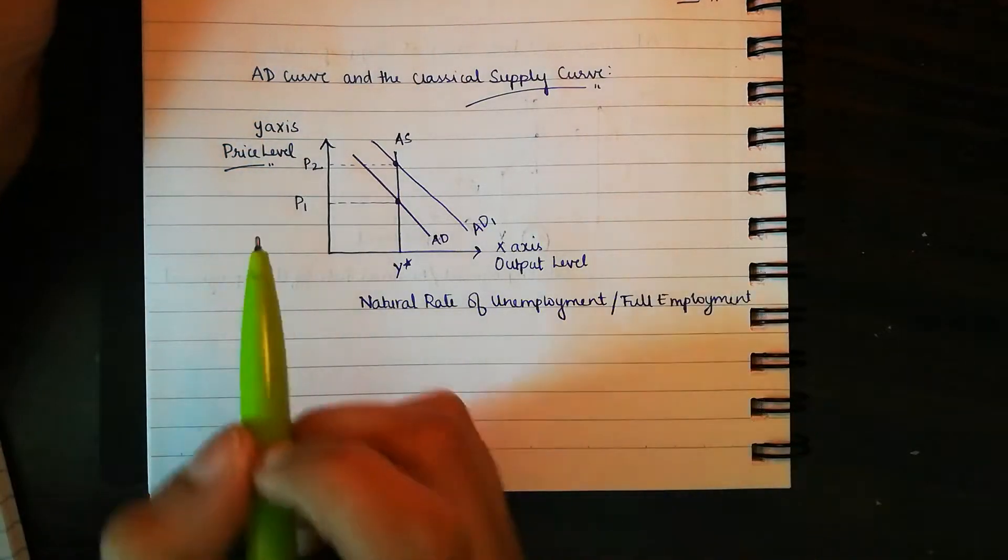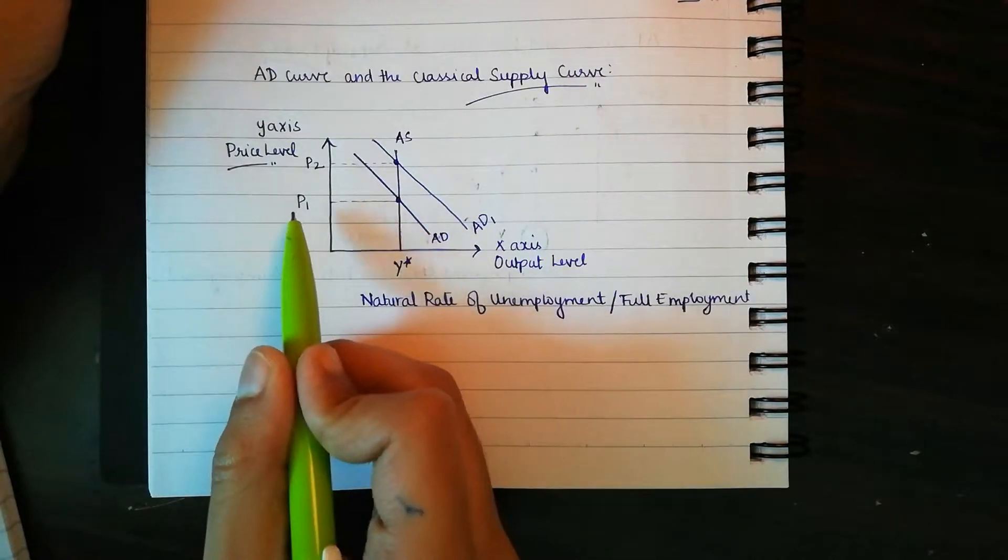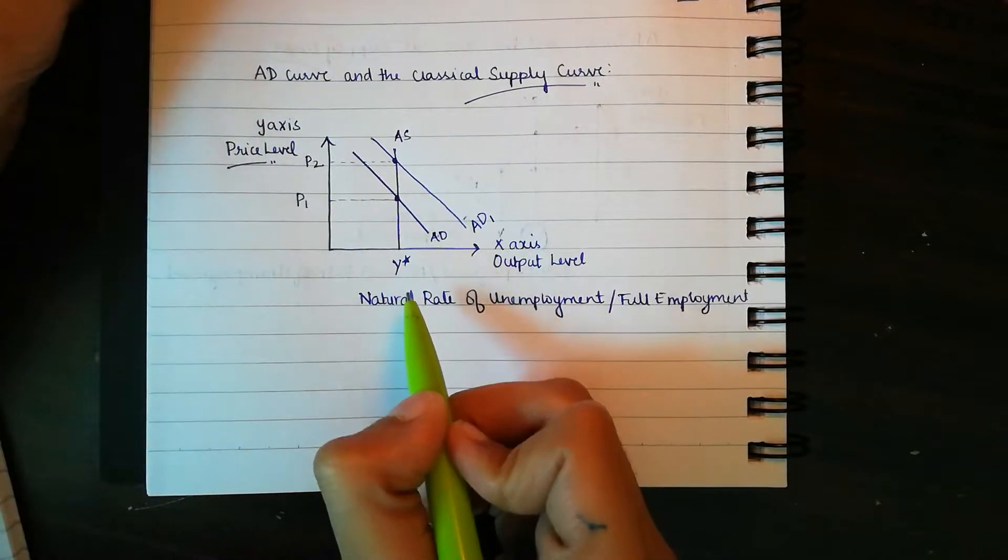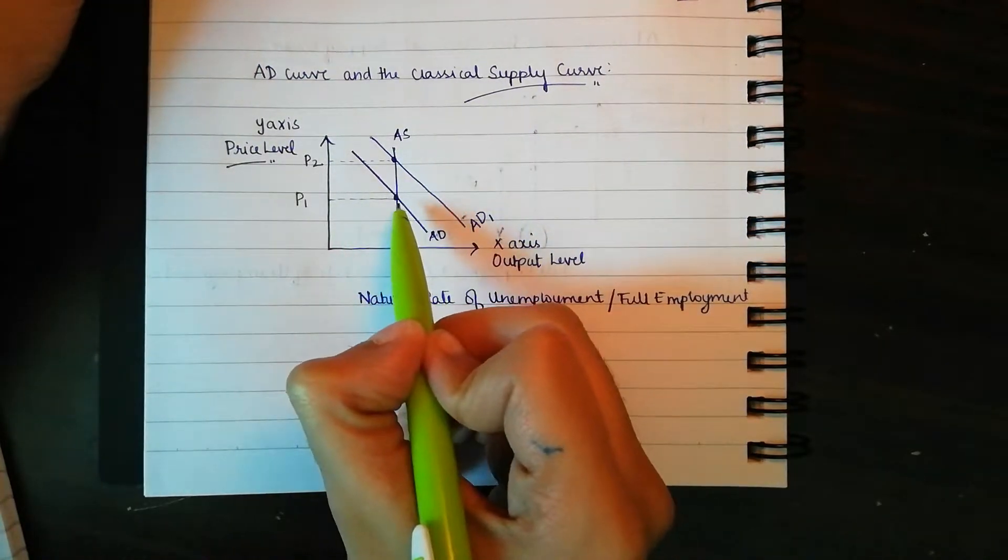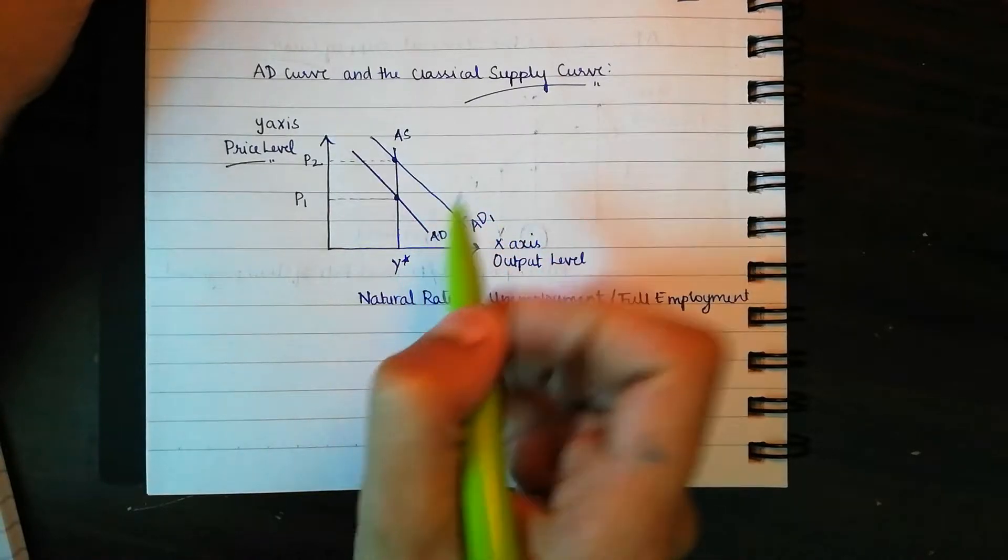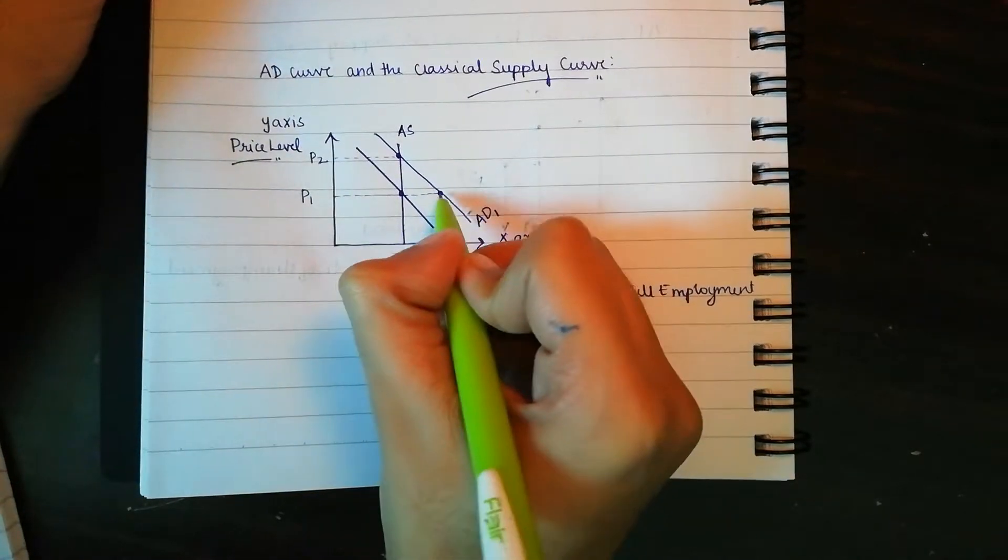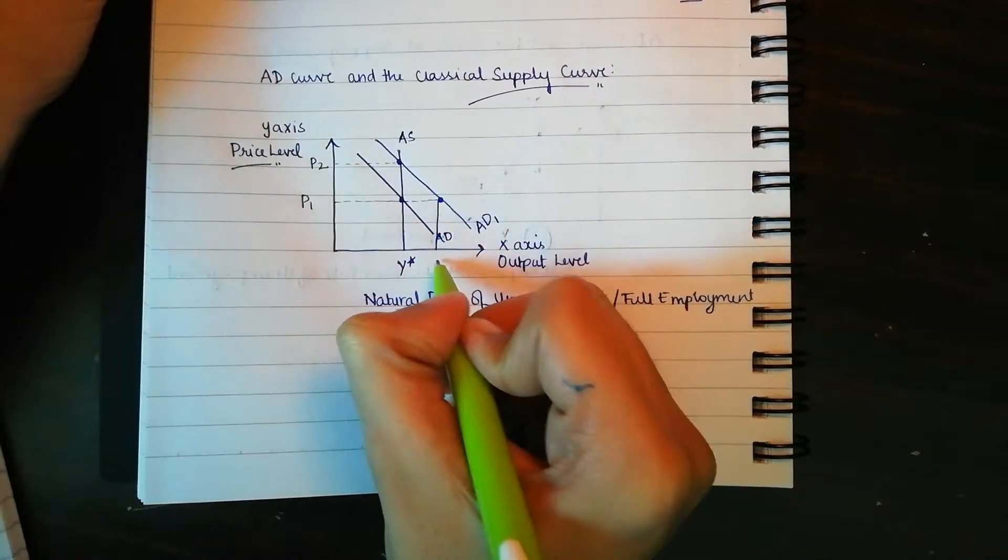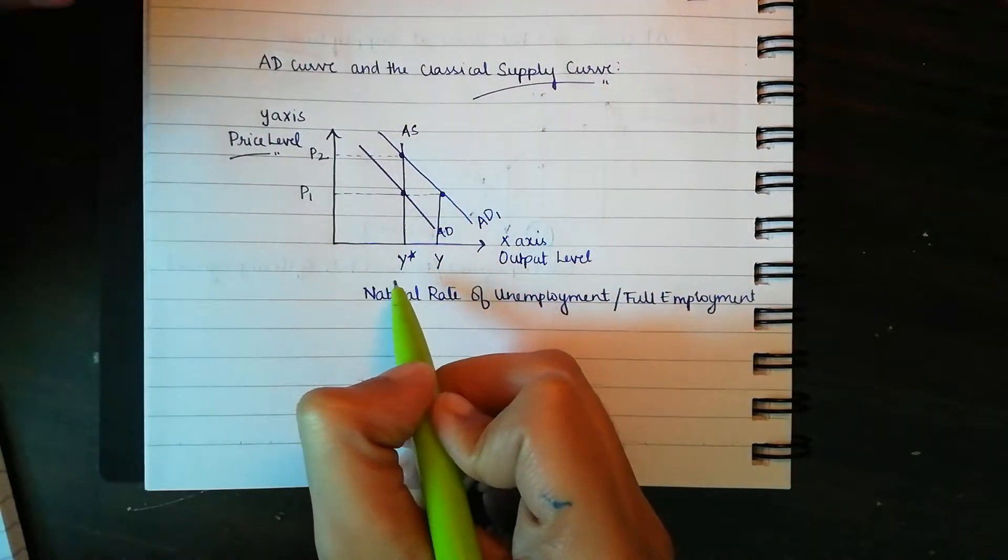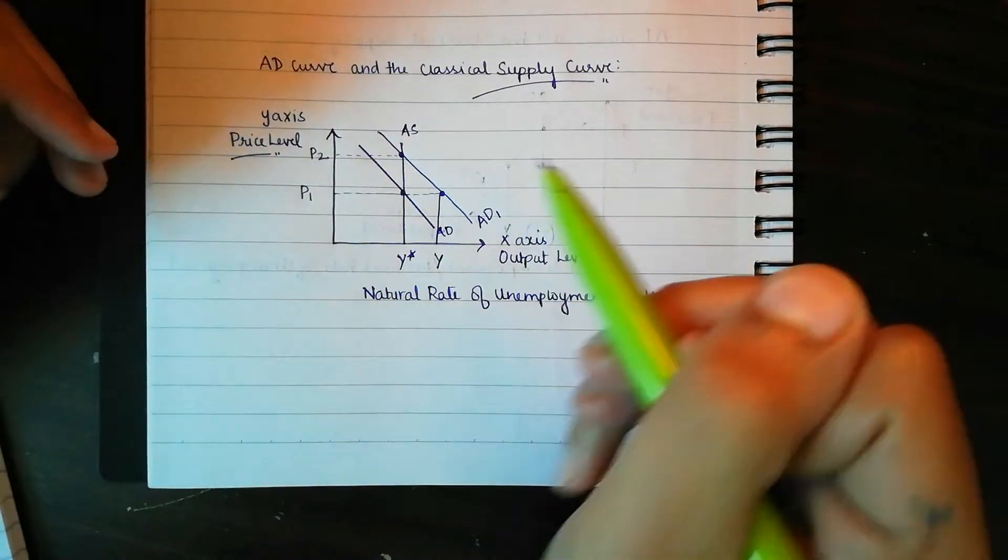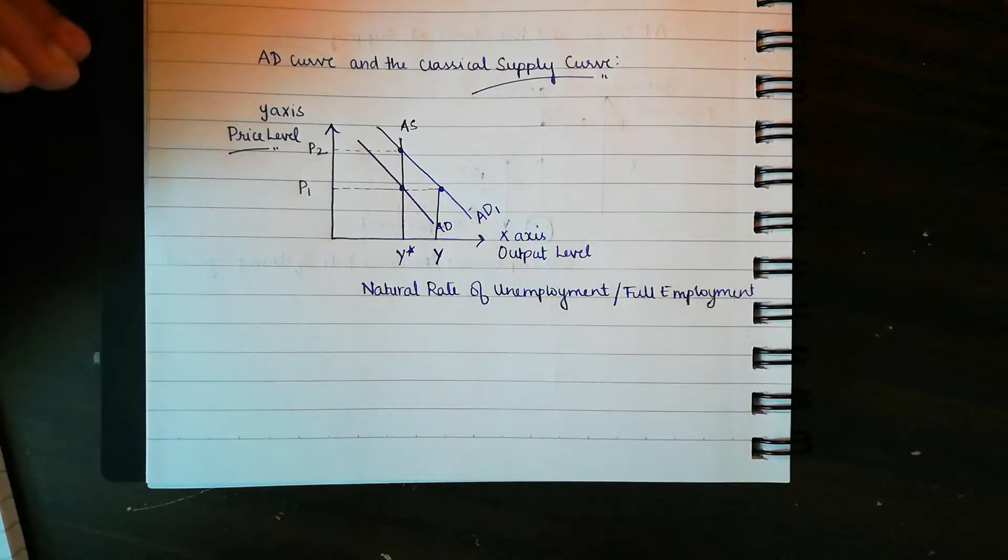So now we can look at this from price P1's point of view. Initially at price P1, our output used to be Y star, the potential output. But now due to the shift of the aggregate demand curve, there's been an increase in demand. At the same price, you used to opt for Y star, but now since demand has increased, you want more output. This might seem good for us.